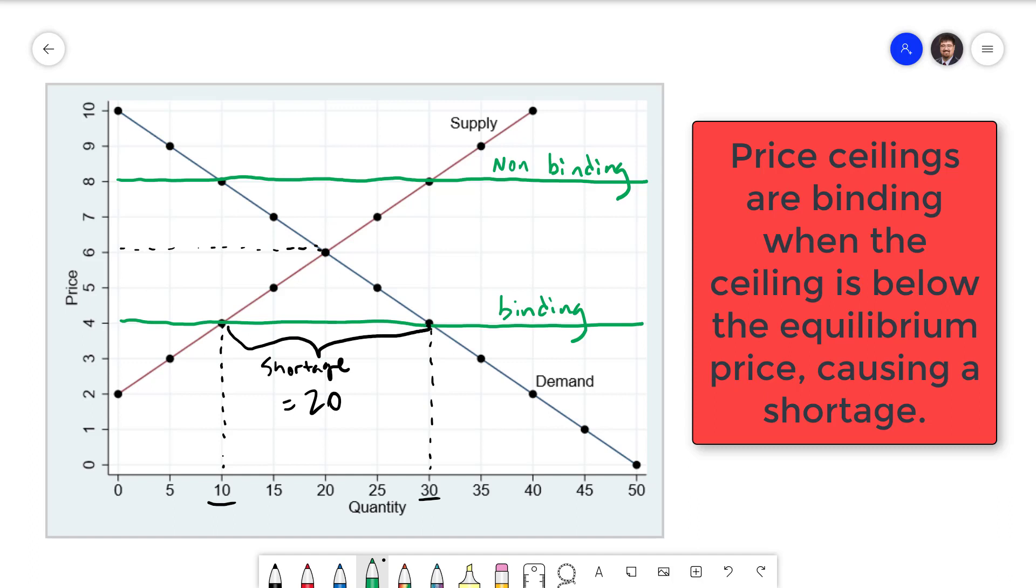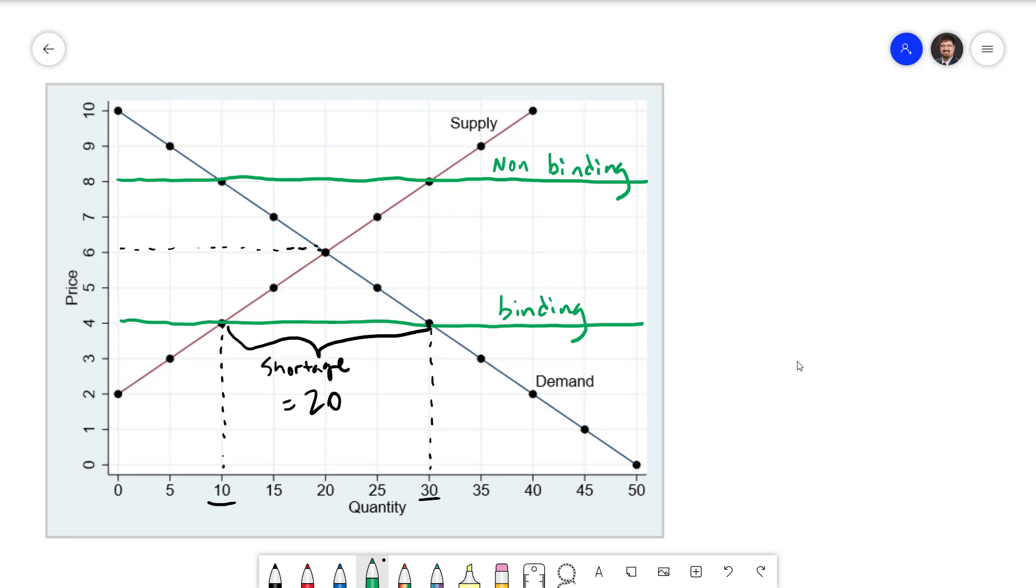This is not to say that a non-binding price ceiling could never become binding. If there is a shift in supply or demand that causes the equilibrium price to go above the non-binding price ceiling, then it's going to become binding.